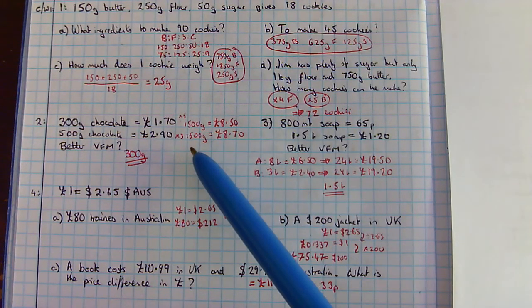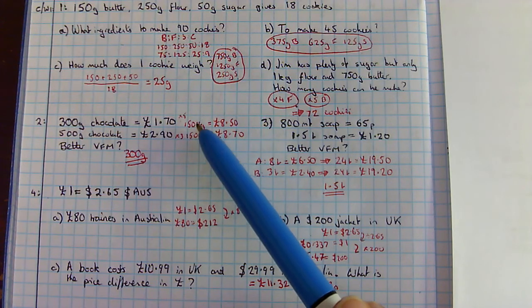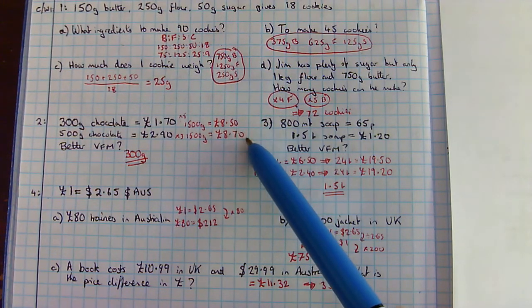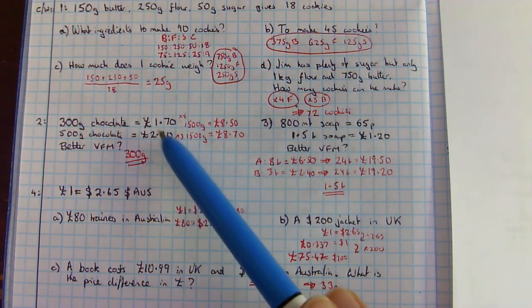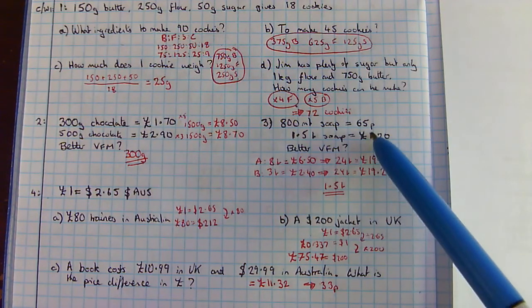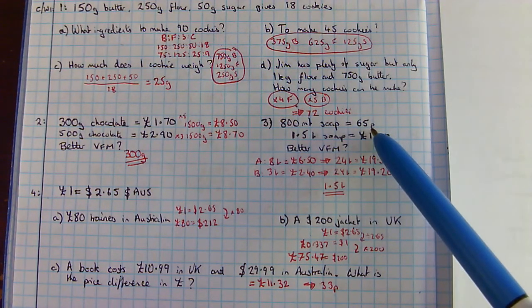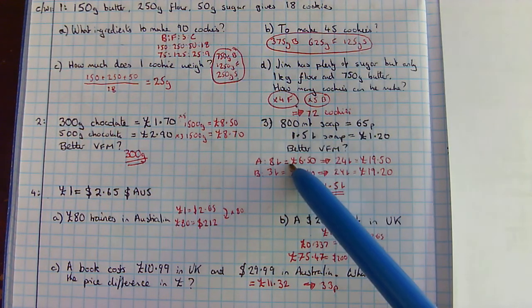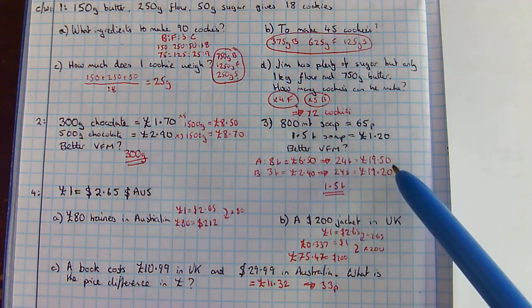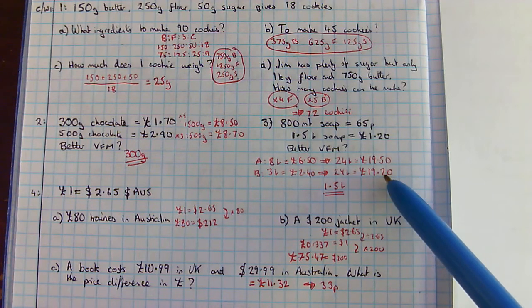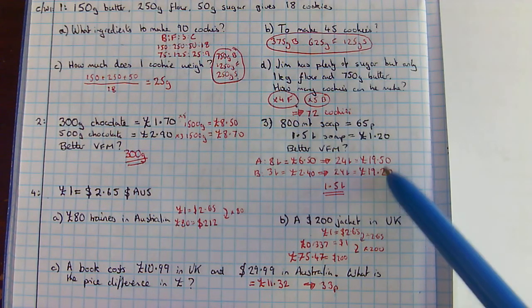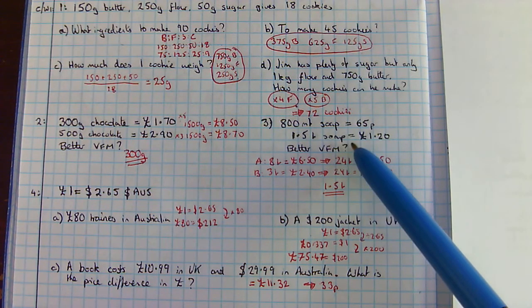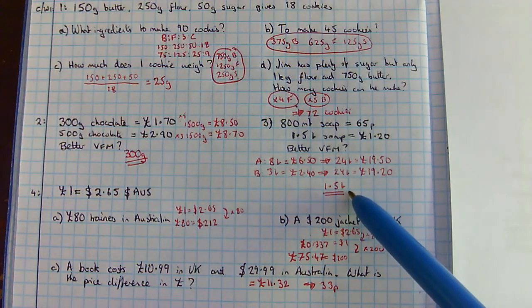For question 2, you go up to 1,500 grams, times everything by 5, £8.50 versus £8.70, so the 300 gram bar is better value for money. For question 3, a bit more complicated if you're using this method. Going up to 8 litres and then on to 24 litres gives you £19.50 versus £19.20 for 3 litres. So, the 1.5 litre soap is the better value for money.